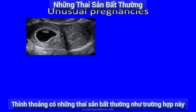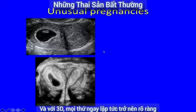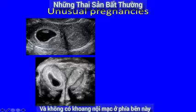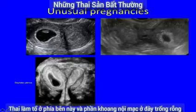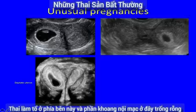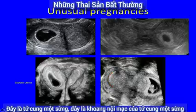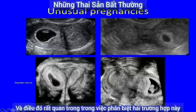Sometimes pregnancies are unusual, as in this case where you've got a pregnancy in one horn and an empty uterine cavity on that side. On 3D it was instantly obvious that this is a septate uterus, with the pregnancy in one horn and an empty endometrial cavity on the other side. That's a very different scenario to here, where the pregnancy is on one side and the empty endometrial cavity is on the other — and on the 3D view you can see this is a unicornuate uterus with a pregnancy in the rudimentary horn. How important to be able to tell these two apart.